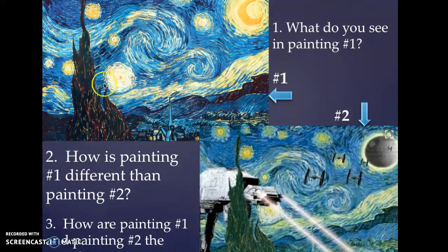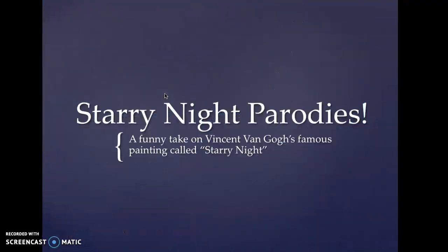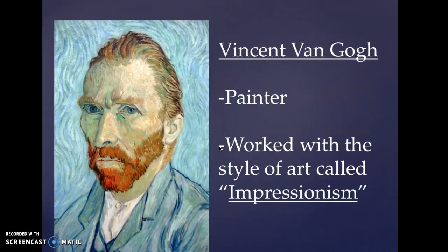This painting right here is a very famous painting made by an artist named Vincent van Gogh, and this is a funny version of this famous Vincent van Gogh painting called The Starry Night. We are going to find out all about Vincent van Gogh and all about what The Starry Night is about, and this word called parody — because that's going to help us create a funny version of our own Starry Night.